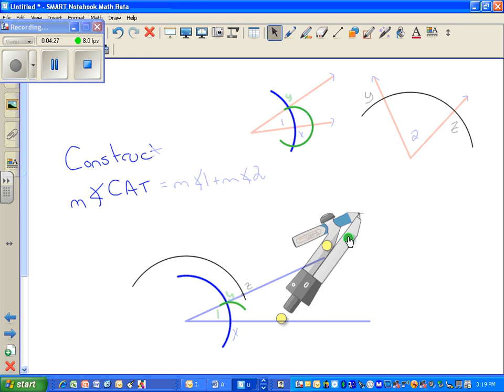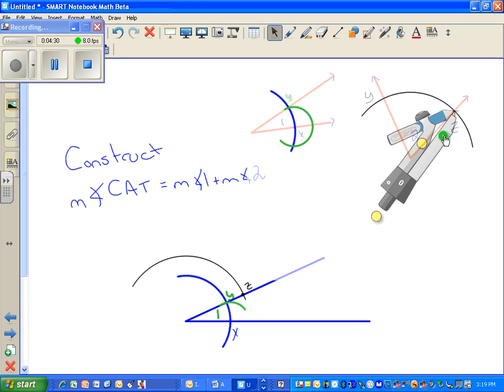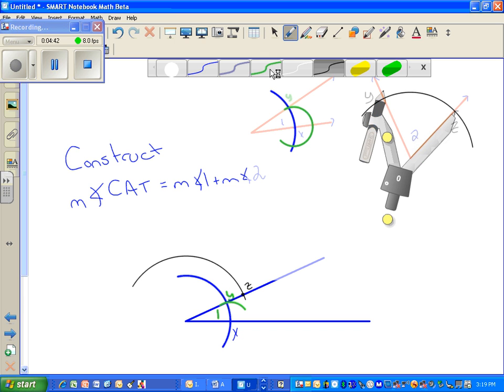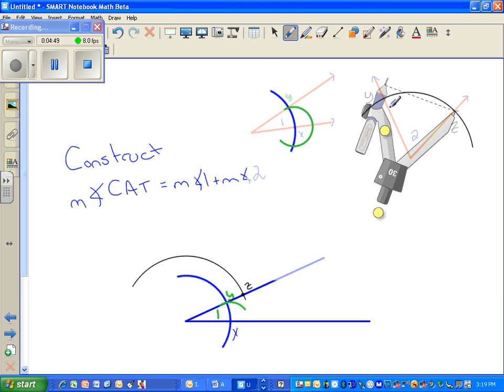So I'm going to pivot on Z and measure to Y. I'm going to set my compass setting so the width is correct. And I'm going to change pencil color again. This one's going to be a lighter blue.